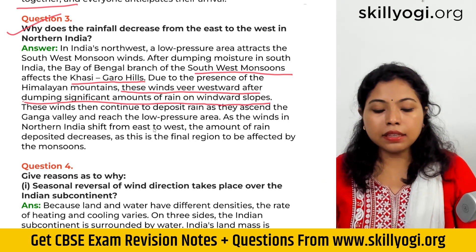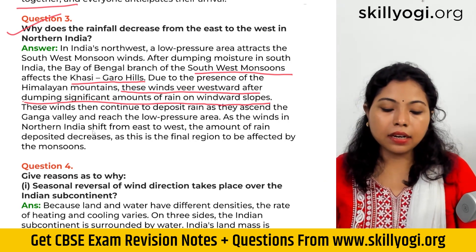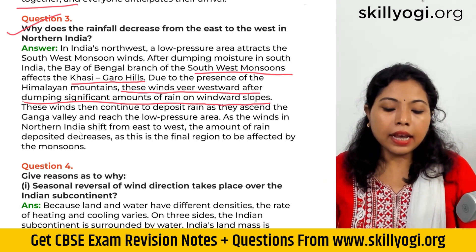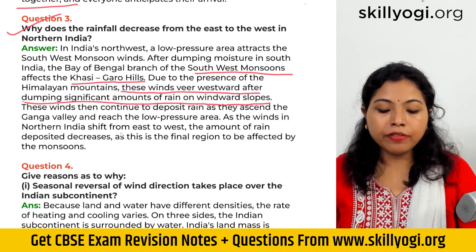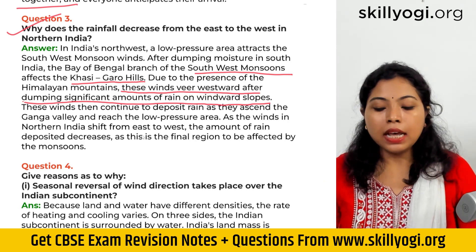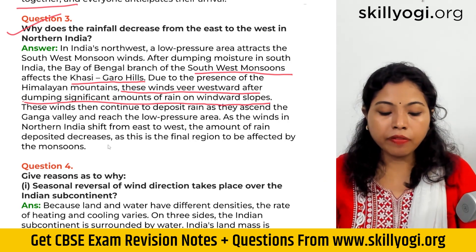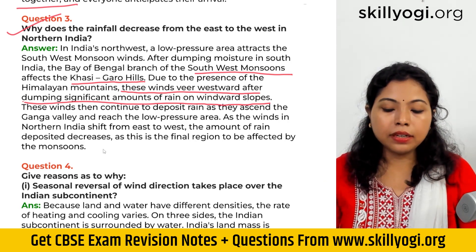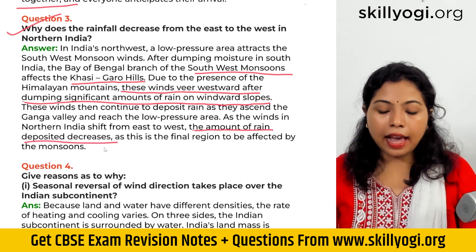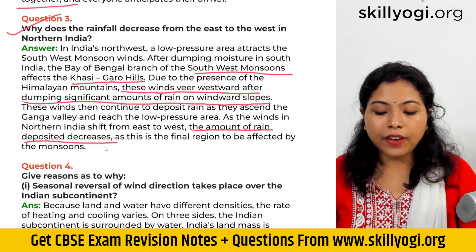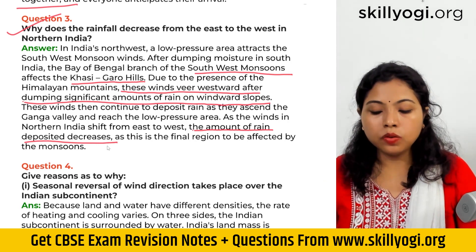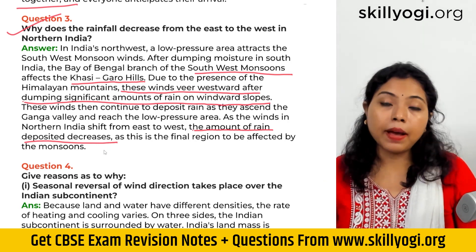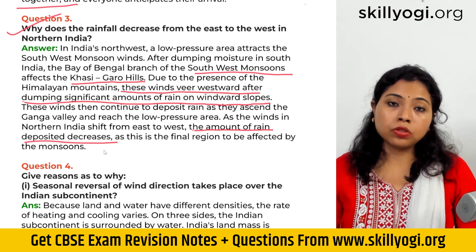As the winds in northern India shift from east to west, the amount of rain deposited decreases, as this is the final region to be affected by the monsoons.